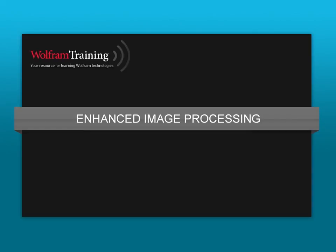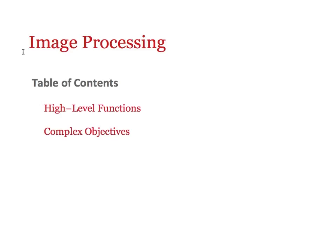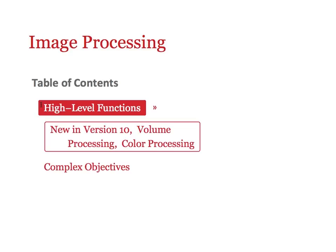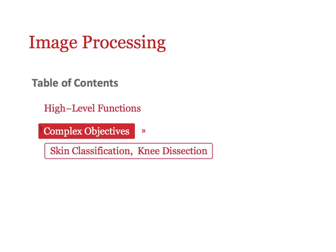Welcome to the image processing part of today's conference. In this presentation, we will show how to accomplish complex objectives using the high-level functions of the Wolfram language. This talk has been prepared by Giulio Alessandrini and myself, Markus van Almsig. The talk consists of two parts: first, we will introduce some high-level functions in image processing, particularly those new in version 10, addressing volume processing and color processing. Next, we will utilize these functions in two non-trivial projects: the construction of a skin detector and the segmentation of magnetic resonance tomography data — a volume set of a knee.